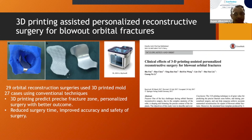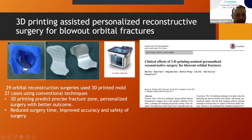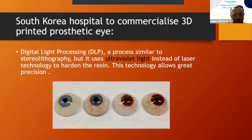They have also used 3D printing to help in reconstructive surgery of blowout fractures of the orbit. Compared to the conventional method, using a 3D printer reduced surgical time, and improved accuracy and safety of the surgery.